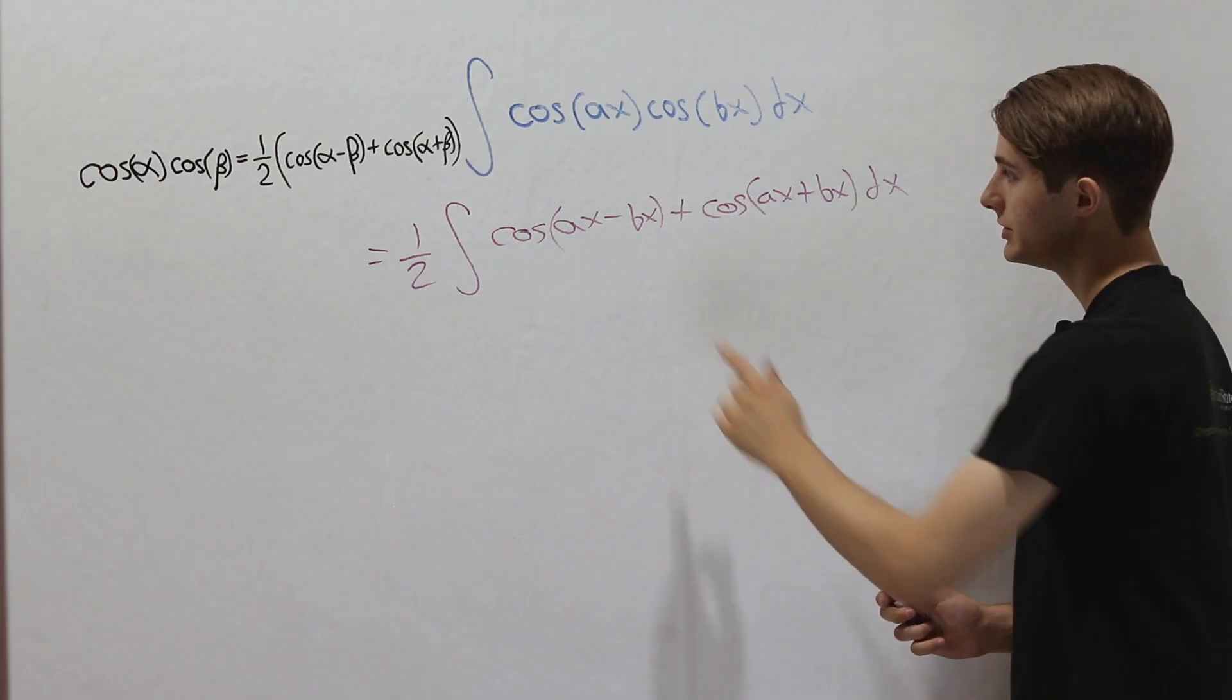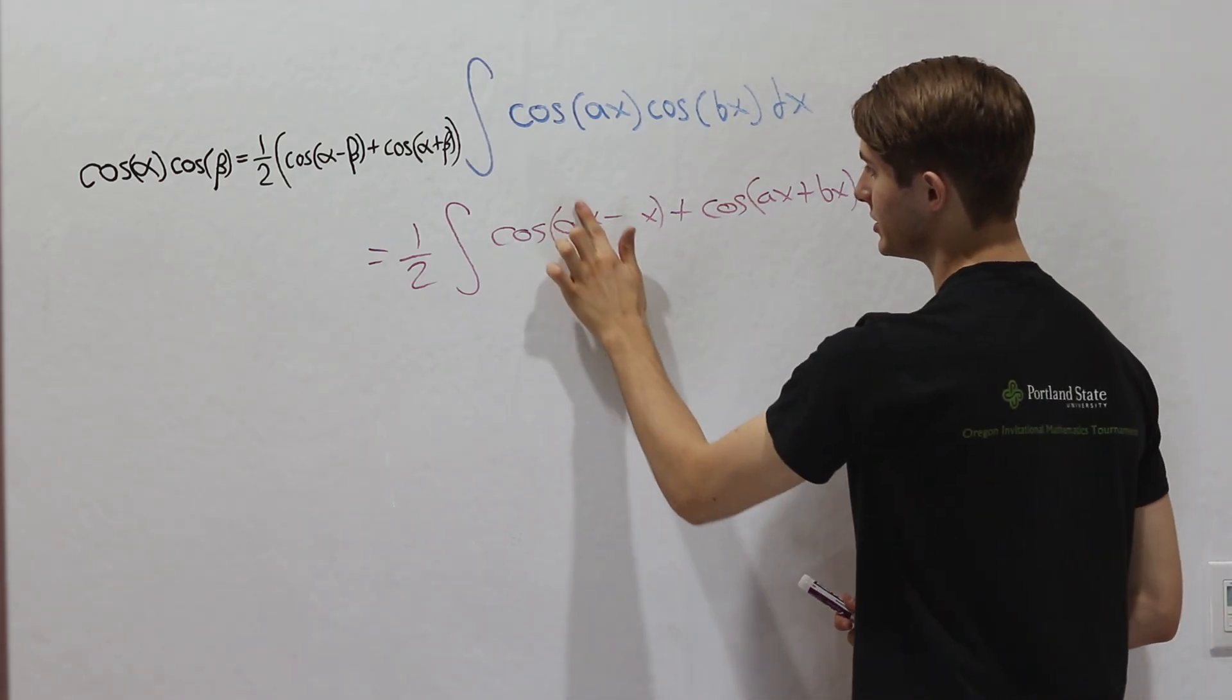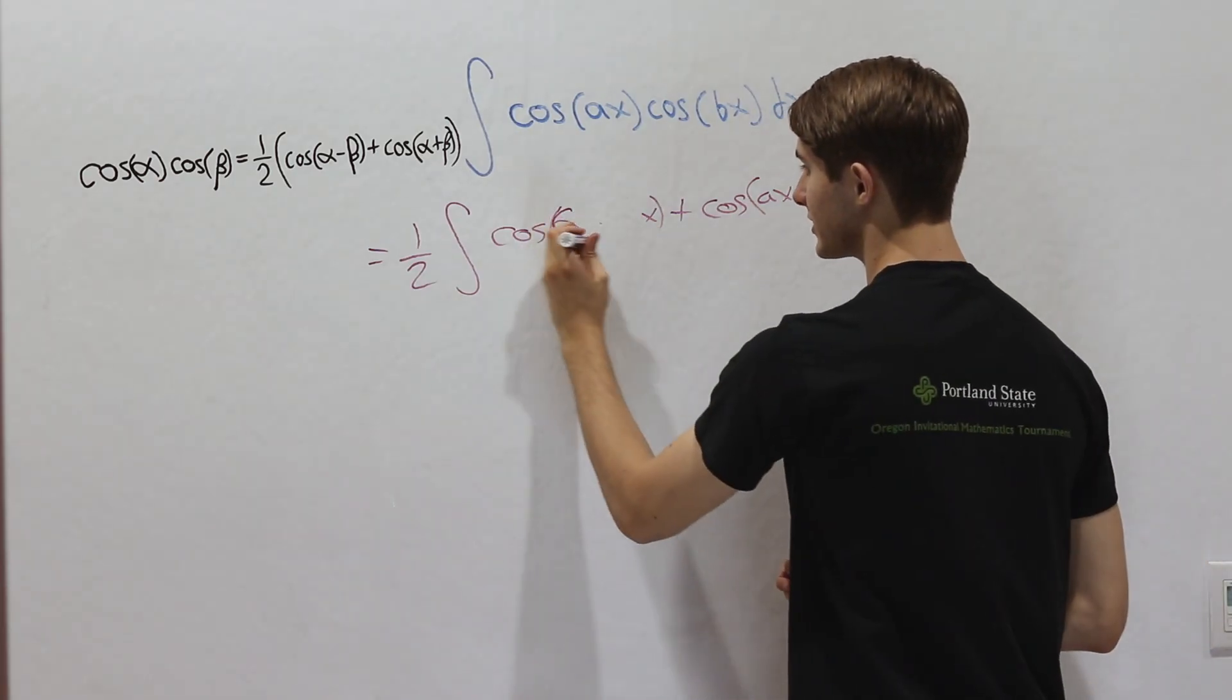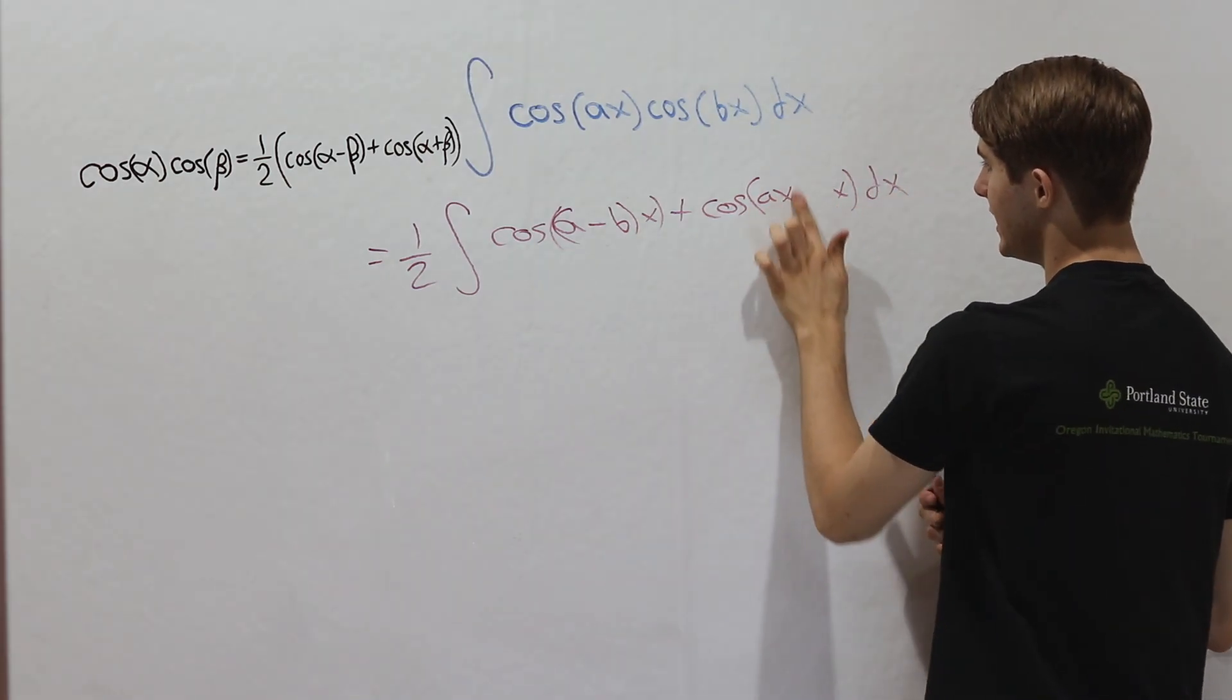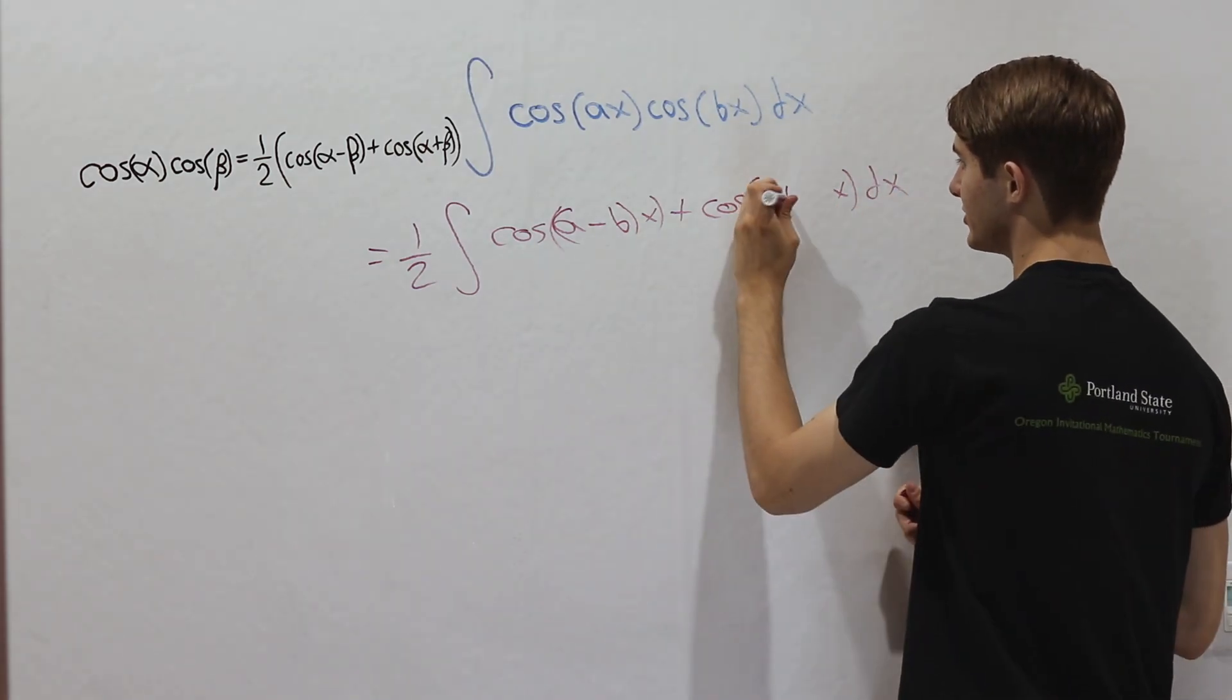Now if we want to integrate this, we should factor out the x from each of these terms. So you get cosine a minus bx, and then cosine a plus bx on this side.